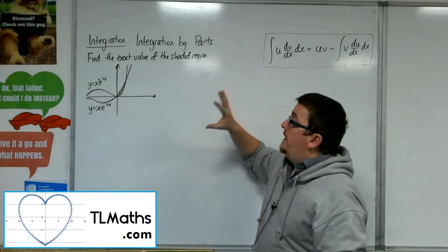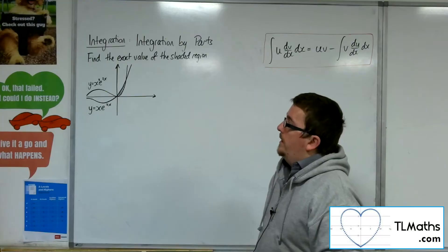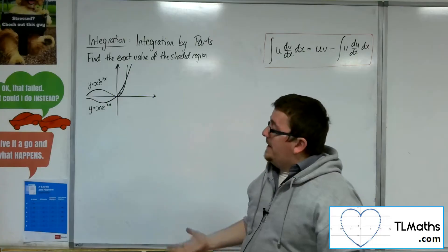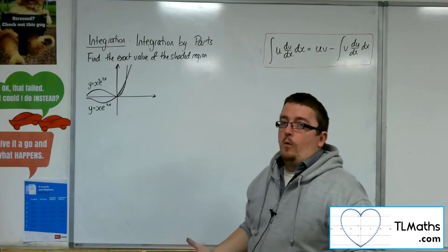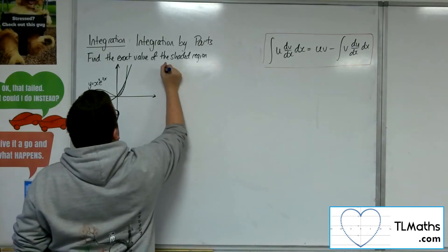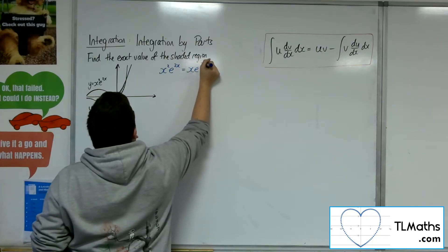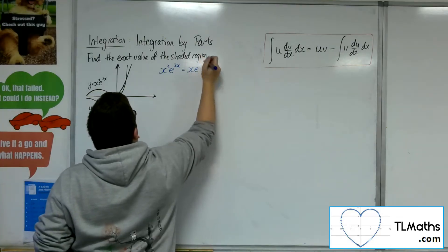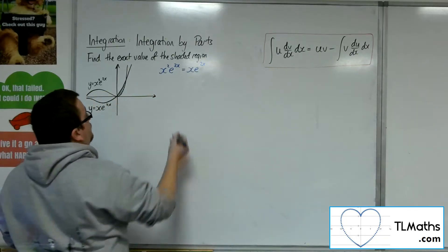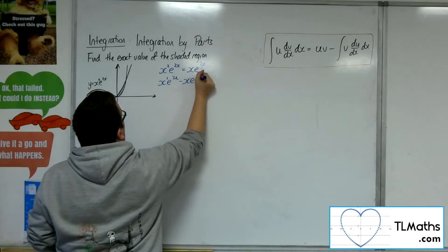Let's find the exact area of this shaded region. We have y equals x squared e to the 2x and y equals x e to the 2x. I need to figure out where they intersect, so setting one equal to the other: x squared e to the 2x equals x e to the 2x. Moving everything to one side: x squared e to the 2x minus x e to the 2x equals 0.